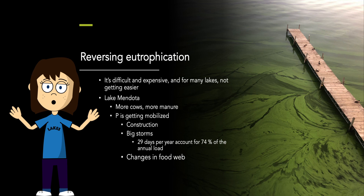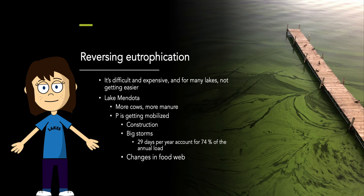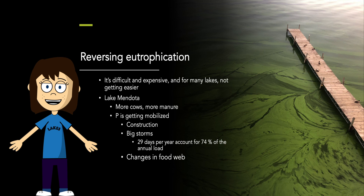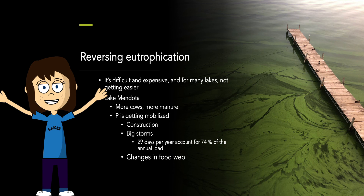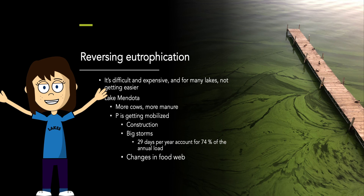Right here at home, we've been trying to reverse eutrophication in the Madison Lakes for a long time, but it's really difficult. In the watershed, more and more nutrients are being mobilized — in part due to livestock manure with no place to go, and also urban development, where construction projects often lead to nutrient runoff despite regulation. At the same time, we're adapting to a new climate — we're seeing bigger storms and more rain in Madison, and big storms are really good at mobilizing nutrients from the watershed. In fact, 29 days per year account for 74% of the annual nutrient load in Lake Mendota. Big storms bring big nutrient loads, and so we still have a long way to go to try and reverse eutrophication here in the Madison Lakes.